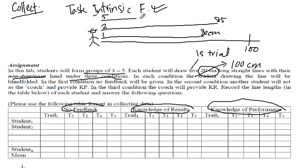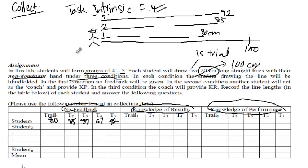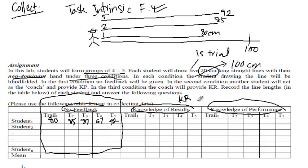They gradually finish the task intrinsic feedback phase after completing trial number five, ending maybe at 92. So for instance: trial one was 80, trial two was 85, then 87, then 67, and trial five is 92. In between each trial they're allowed to see their position, but when they start again they're blindfolded. The other students do the same and they complete this segment of the table.